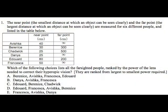Let's carefully read through the problem. The near point — the smallest distance at which an object can be seen clearly — and the far point — the largest distance at which an object can be seen clearly — are measured for six different people and listed in this table. Avishka: near point 40 cm, far point infinity. Berenice: 30 and 300. Chadwick: 25 and 500. Dania: 25 and infinity. Edward: 80 and 200. And Francesca: 50 and infinity.